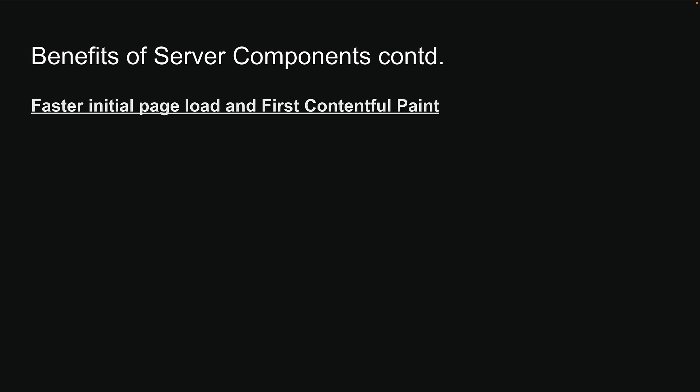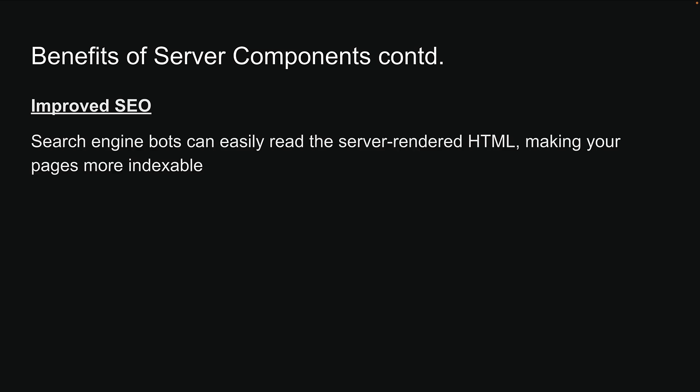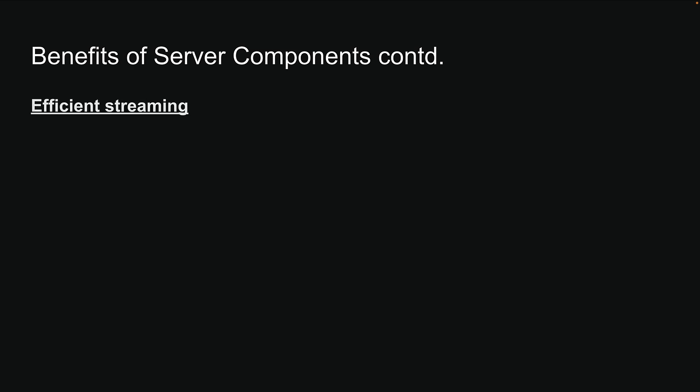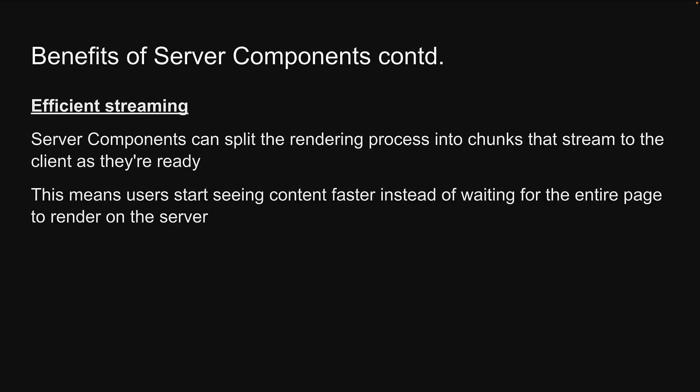Sixth, initial page load and first contentful paint get a serious upgrade. By generating HTML on the server, users see your content immediately and there is no waiting for JavaScript to download and execute. Seventh, SEO improves too. Search engine bots can easily read the server-rendered HTML, making your pages more indexable. And finally, there is streaming. Server components can split the rendering process into chunks that stream to the client as they're ready, meaning users start seeing their content faster instead of waiting for the entire page to render on the server.